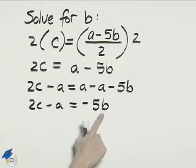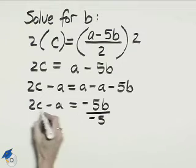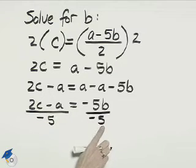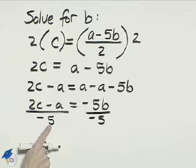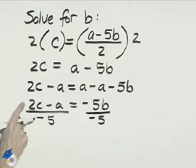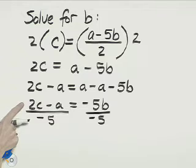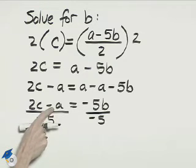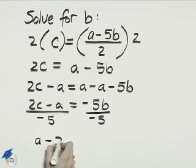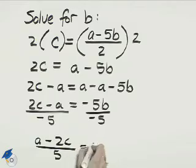Now to solve for b, we need to divide out negative 5 — divide both sides by negative 5 — and we'll have b on the right hand side. We never want to leave a negative in the denominator, so we can pull it up into the numerator. The negative on the 5 will make 2c negative and make a positive. That gives us positive a minus 2c over positive 5, and on the right is b.